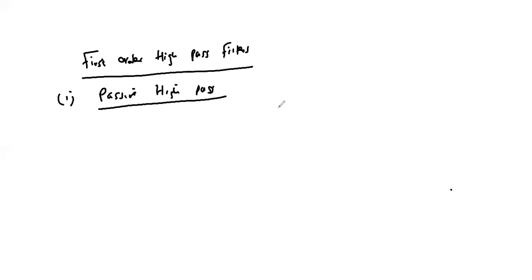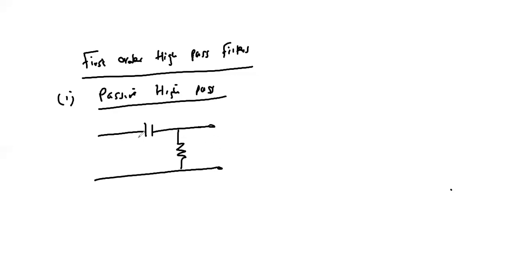The simplest passive first-order high pass filter is when you have a capacitor and a resistor in series, with the output taken across the resistor. This is the input, and this is our output from the resistor-capacitor series network. We can observe that the output by the voltage divider theorem will be given accordingly.